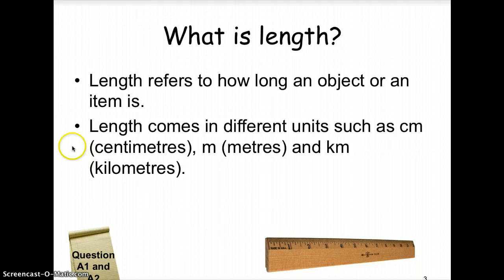The first one centimeters, the short form is cm. The next one meters, the short form is m. And last but not least you have kilometers, the short form is km.